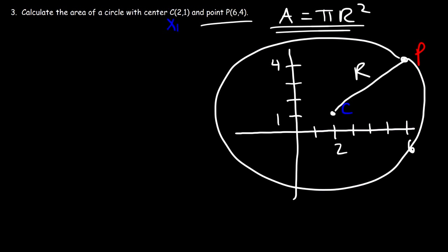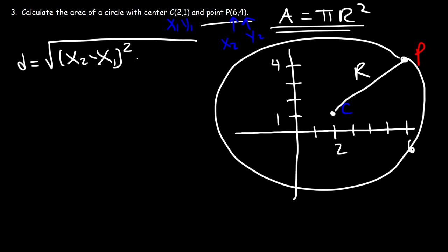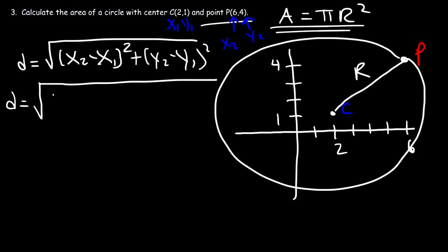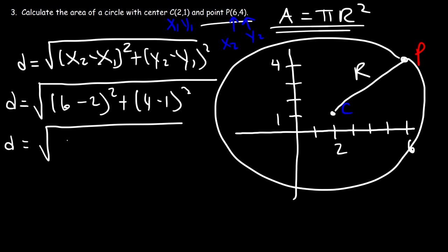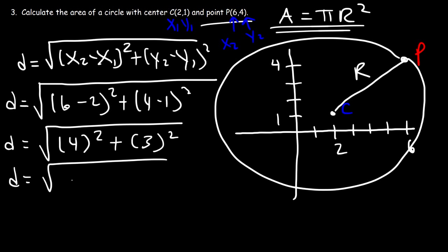Let's call the center x1 = 2, y1 = 1, and point P: x2 = 6, y2 = 4. Using the formula D equals the square root of (x2 minus x1) squared plus (y2 minus y1) squared: 6 minus 2 is 4, and 4 minus 1 is 3. Then 4 squared is 16, 3 squared is 9, and 16 plus 9 is 25. The square root of 25 is 5.